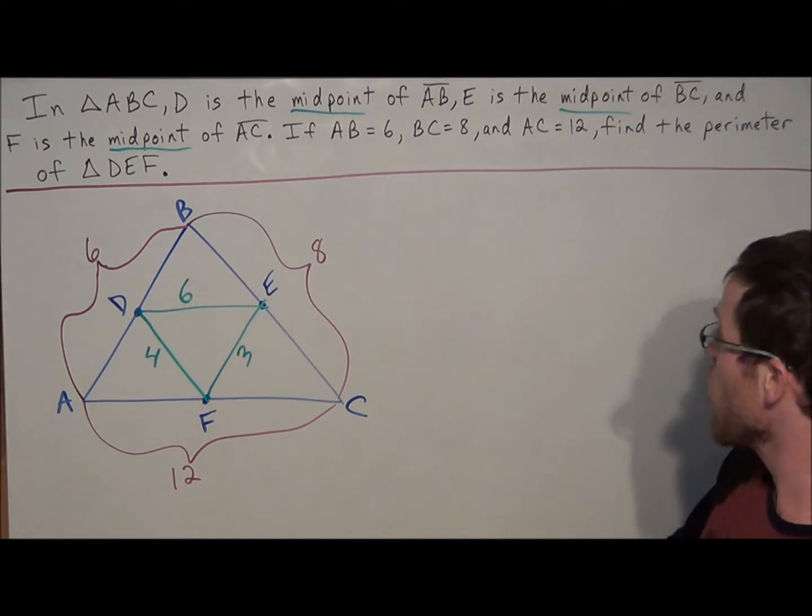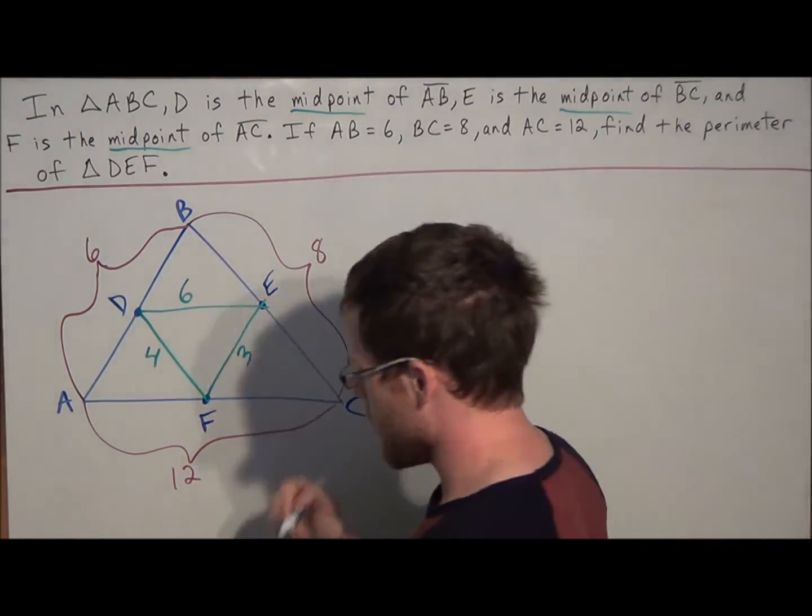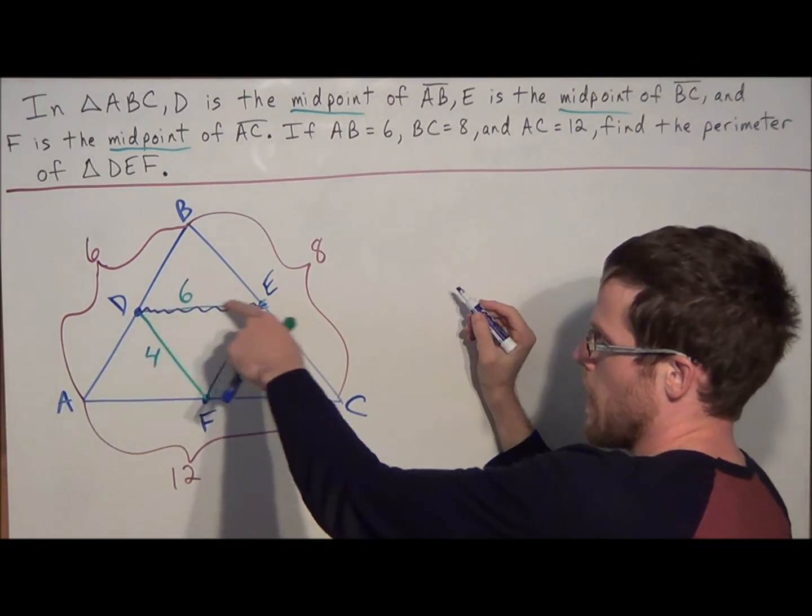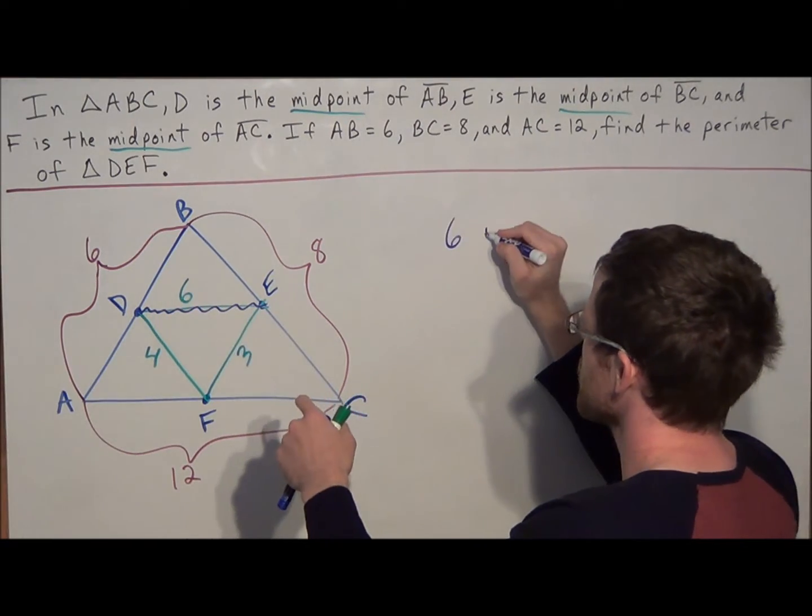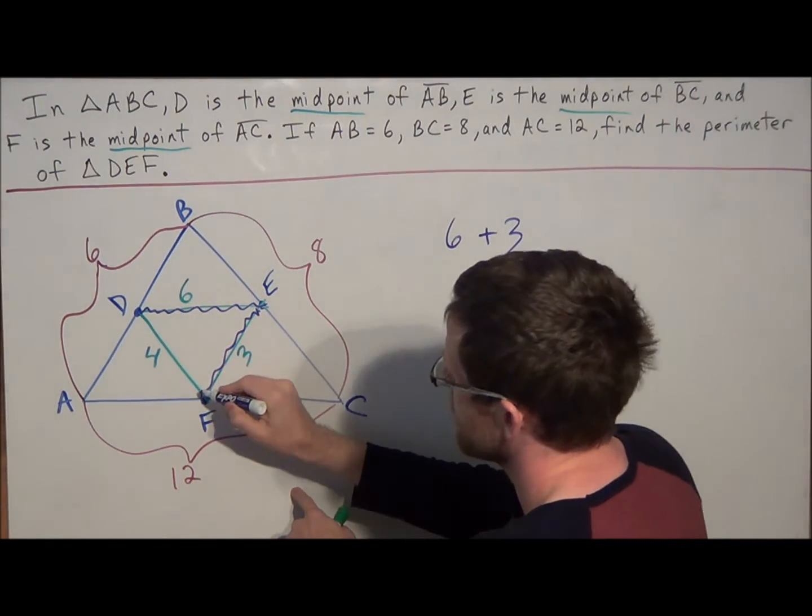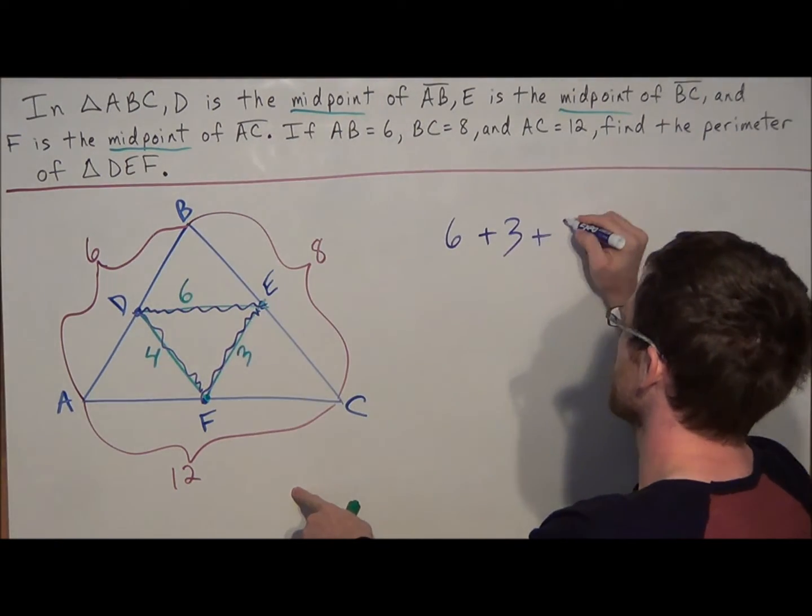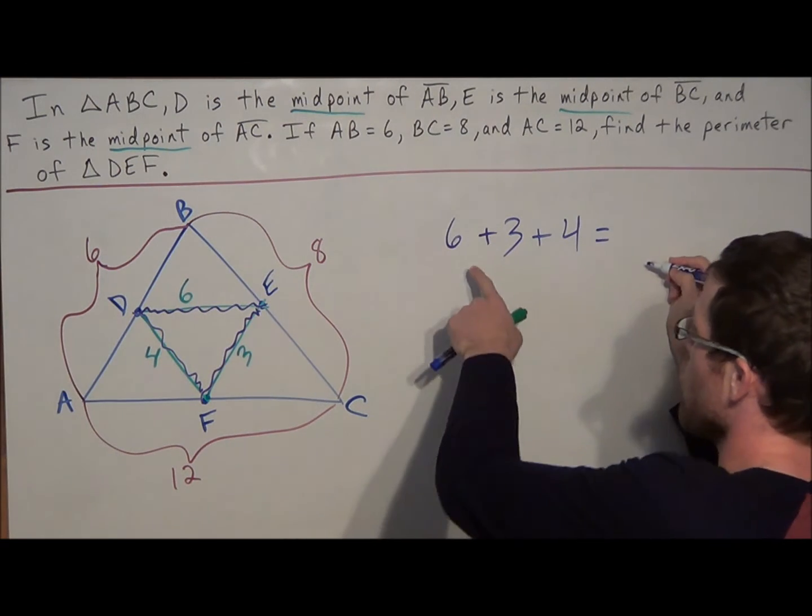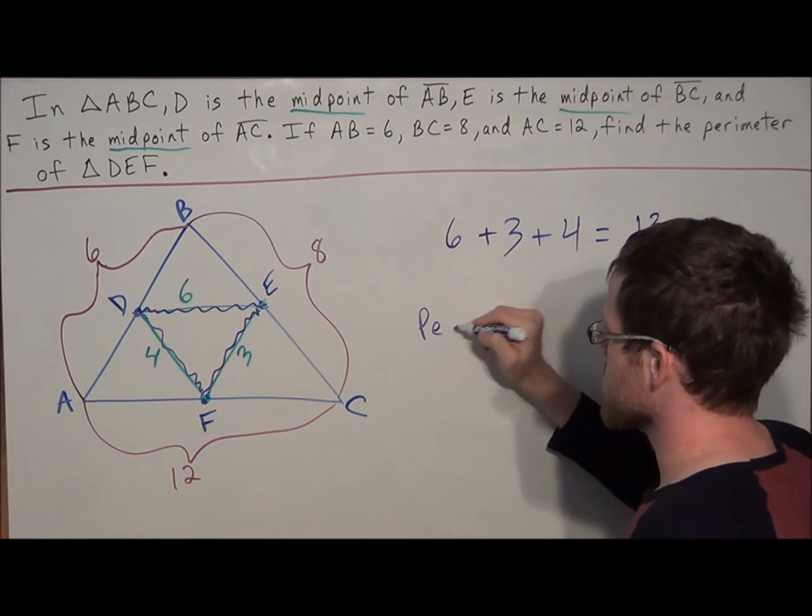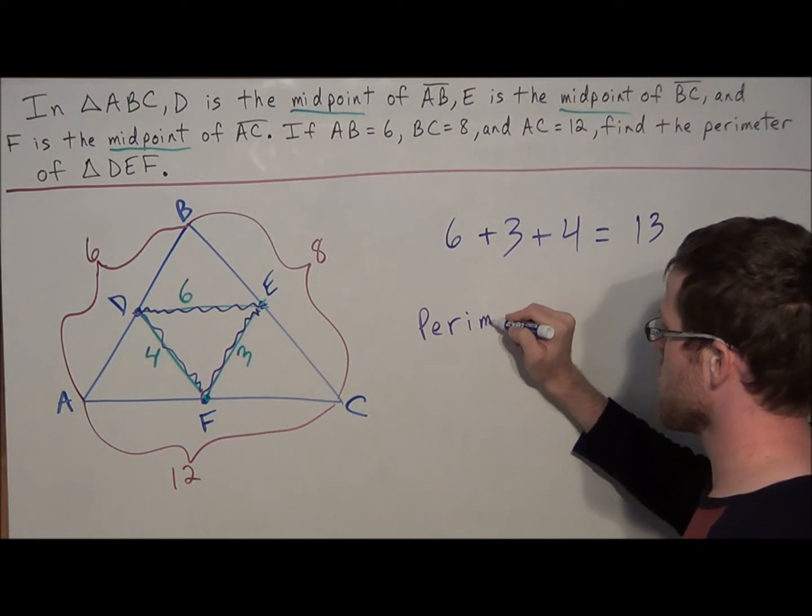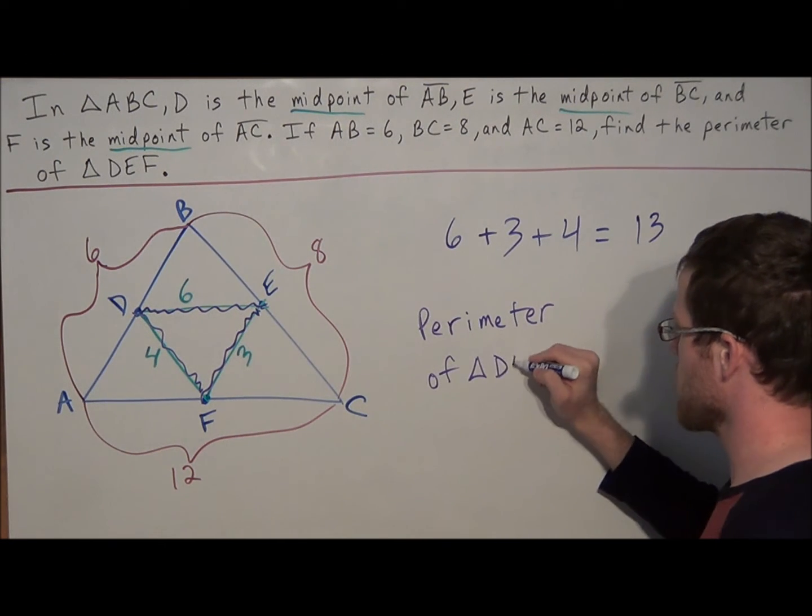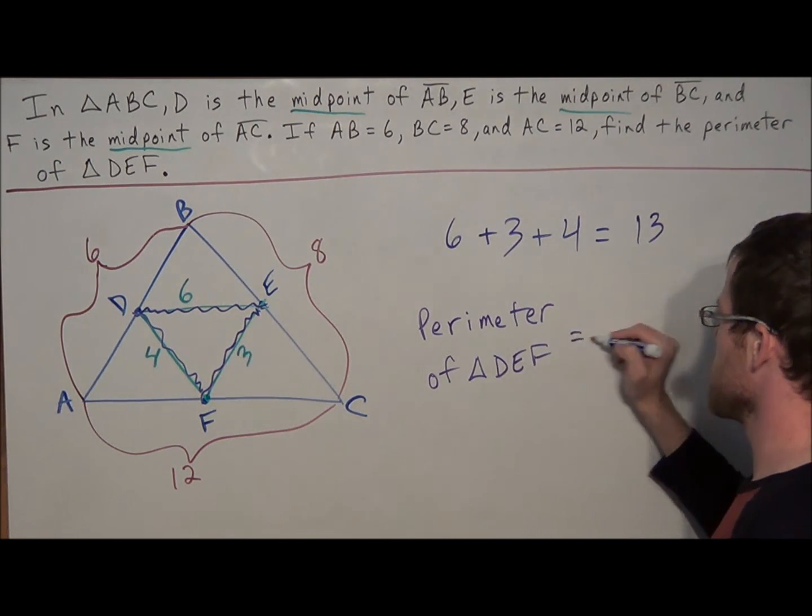So then the last step, since we are finding the perimeter of triangle DEF, we're just going to add up all around the triangle. So if we trace a path around, we're going 6 plus 3, and then the last side, we're going another 4. So when we add all three of these sides up, we're going to have 13. So if we want to write our answer formally, the perimeter of triangle DEF is equal to 13.